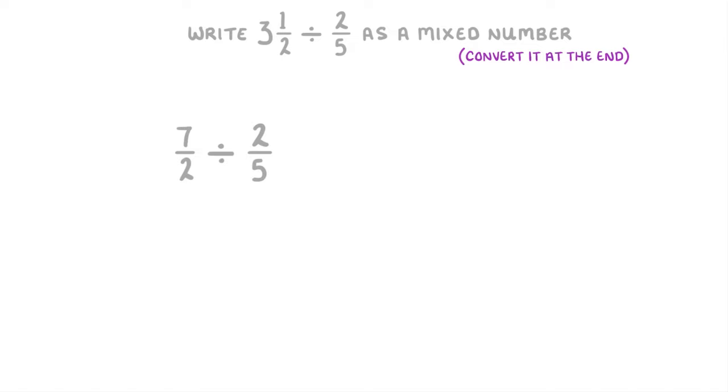Then, like always, we flip the 2 over 5 upside down to get 5 over 2, and change the divide to a multiply. So we're going to do 7 times 5, which is 35, and 2 times 2, which is 4, to get 35 over 4. And we can't simplify this at all.